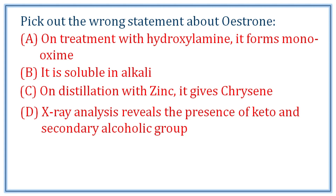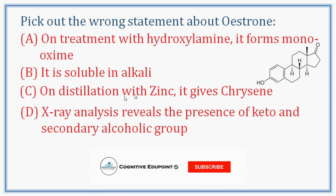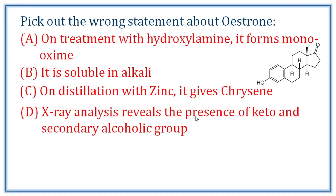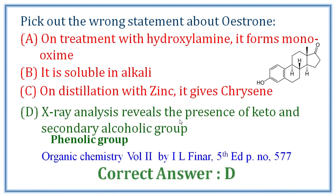Next question: pick out the wrong statement about oestrone. Looking at the oestrone structure: it has a keto group — on treatment with hydroxylamine, it forms a monoxime (correct, due to the keto group). It is soluble in alkali due to the phenolic group, forming sodium phenoxide with alkali (correct). On distillation with zinc, it gives chrysene — most steroids give chrysene (correct). D: X-ray analysis reveals the presence of keto and secondary alcoholic group — but oestrone has a phenolic group, not a secondary alcoholic group. That is the wrong statement. Correct answer: D.